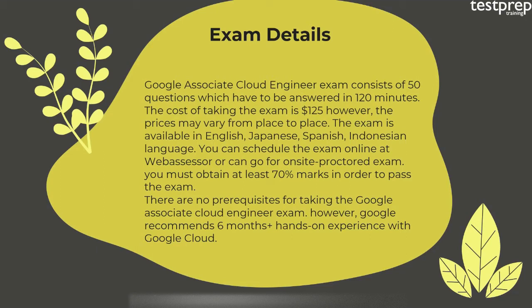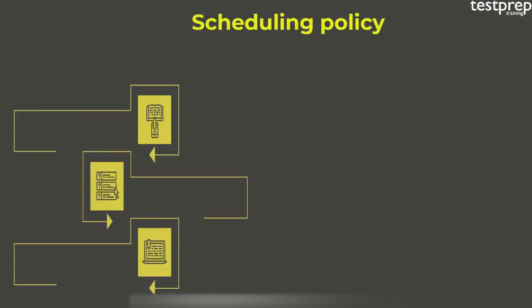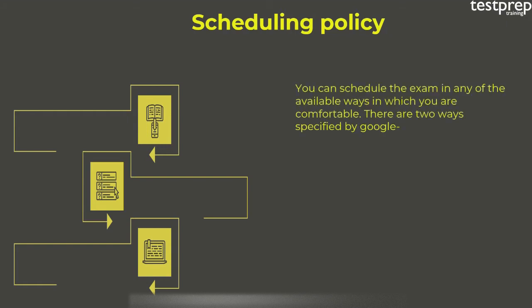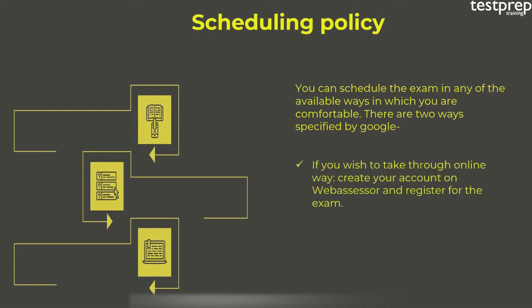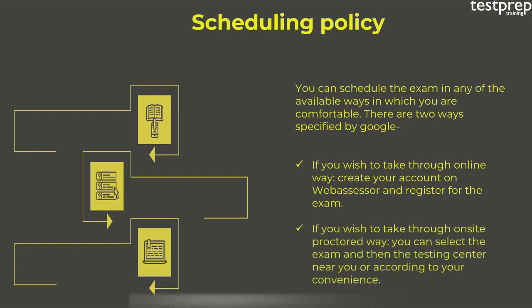There are no prerequisites for taking the Google Associate Cloud Engineer exam; however, Google recommends six months or more of hands-on experience with Google Cloud. Regarding scheduling policy, there are two ways specified by Google: first, if you wish to take the online way, create your account on Web Assessor and register for the exam; second, for the on-site proctored way, select the exam and then the testing center near you or according to your convenience.